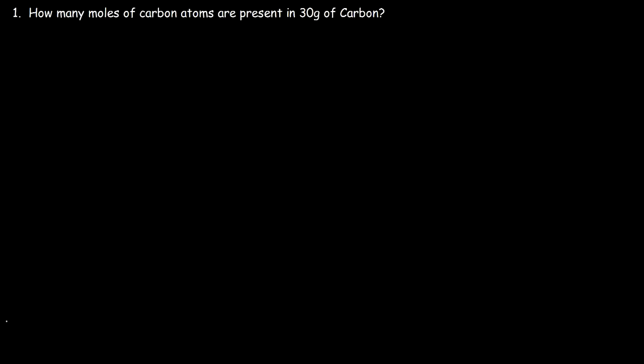In this lesson we're going to talk about how to convert grams to moles. The first thing you need to do is identify the molar mass of carbon. Take the periodic table and look for carbon. Carbon has an atomic number of 6 and an atomic mass of 12.